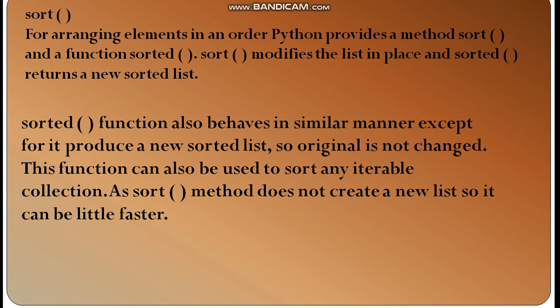Next is sort. For arranging elements in an order, Python provides a method sort and a function sorted. The difference between the two is that the sorted function creates a new sorted list, so the original list does not change. Whereas the sort method does not create a new list, so it can be a little faster. The sort method does not create a new list, which is why it's faster. Let's look at the sort method.